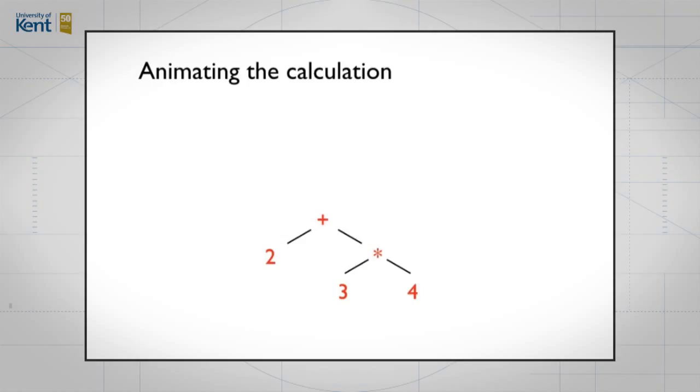Now you can see this in action on our example expression. You can animate what's going on. We work out a value for each of the leaves. Each number has its corresponding value. Then we combine the three and the four by multiplying them to get 12. At top, we get the addition of the two on the left and the 12 on the right to give us 14. The recursion is allowing the values to flow up the tree like that.